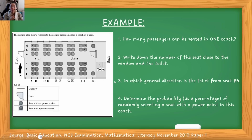How many passengers can be seated in one coach? We look at the coach and count all the chairs. You've got six, six, six, six, six, six, six, six, six, and six — so essentially ten groups of six, which gives a total of 60 chairs.